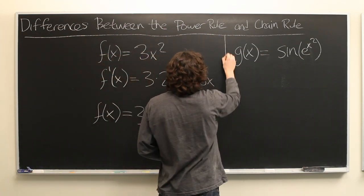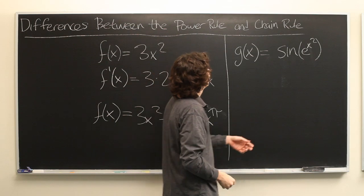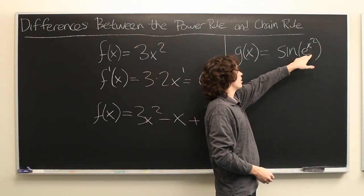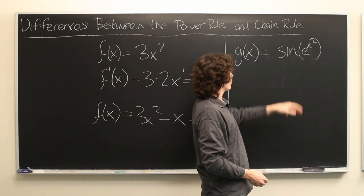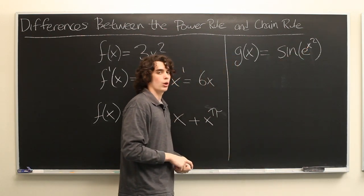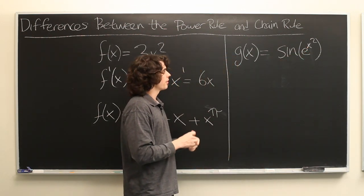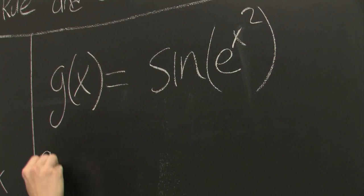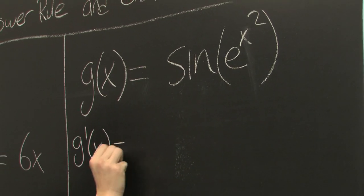But once you start going into functions that are being composed, for example, we have the x squared function composed with the exponential function composed with the sine function. As we start moving away from the polynomial forms, then we have to start using the chain rule. So what is the derivative of this nasty-looking function?